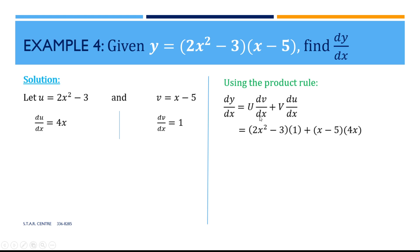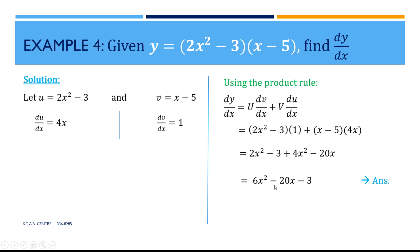Substituting into the product rule: dy/dx equals u, which is (2x squared minus 3), multiplied by dv/dx being 1, plus v which is (x minus 5), times du/dx being 4x. Simplifying each pair: 2x squared minus 3 multiplied by 1 stays as is. Then 4x multiplied by x gives 4x squared, and 4x multiplied by minus 5 gives minus 20x. Combining like terms: 2x squared plus 4x squared gives 6x squared, minus 20x, minus 3. That's the final answer for example 4: 6x squared minus 20x minus 3.